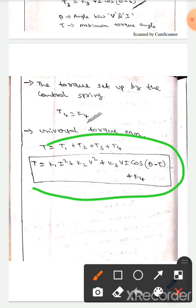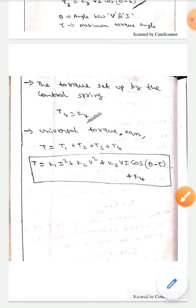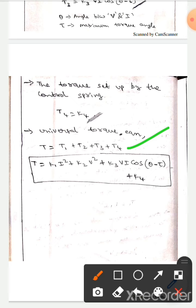Then we will get T equals to k1 into i square plus k2 into v square plus k3 into vi cos theta minus tau plus k4.